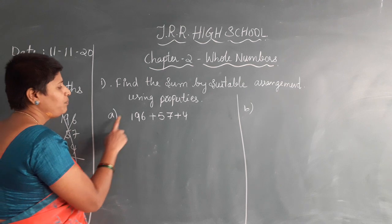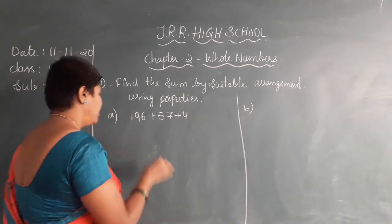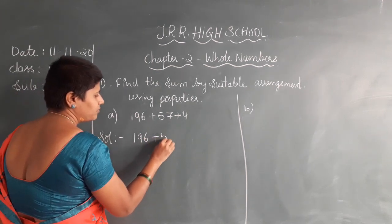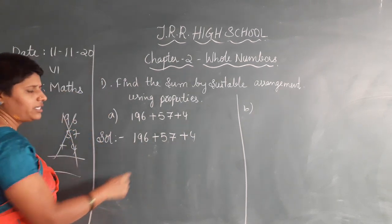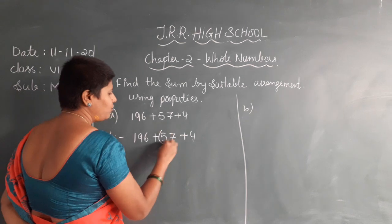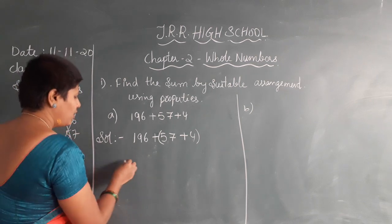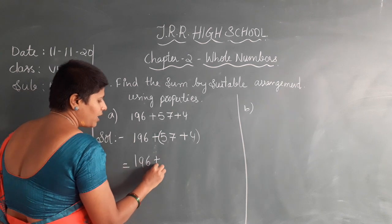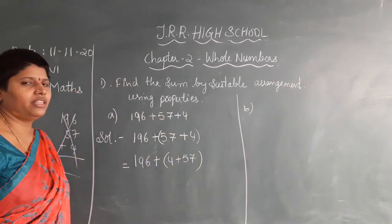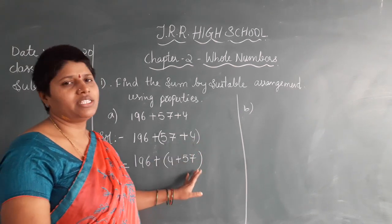The first question is 196 plus 57 plus 4. Three numbers have been given. Now how to write it? The first step is write down the number: 196 plus 57 plus 4. Now you have three numbers. You can take any two numbers — either the first two or the last two. Now in the next step, I am writing 57 plus 4. I have written it as 4 plus 57.